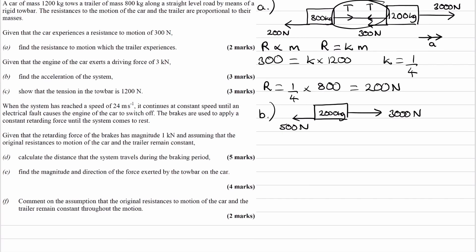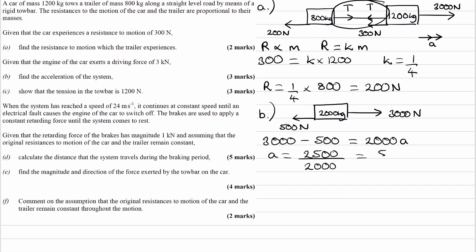Now that we have our force diagram, we can work out the acceleration. We do 3,000 newtons forwards minus the 500 newtons backwards — that's the resultant forwards force — and that equals M times A. So our acceleration will be 2,500 divided by 2,000, which gives us 5 over 4 meters per second squared.